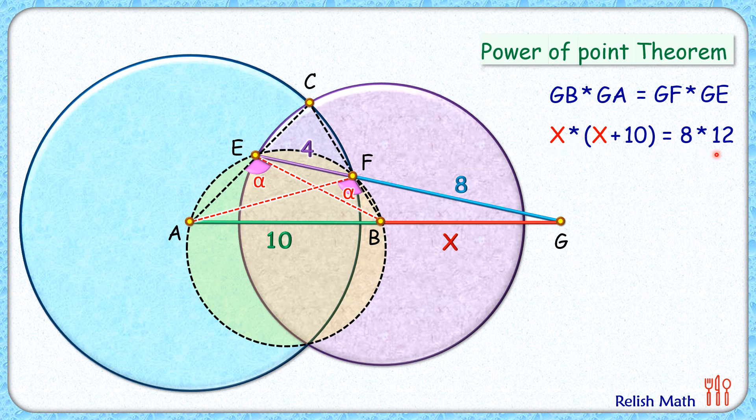Opening the brackets and simplifying, we get a quadratic in terms of X. Solving this quadratic equation by factorization, we get two factors. Solving gives either X equals negative 16 or X equals 6, but X can't be negative. So X is 6 cm, and that's our answer.